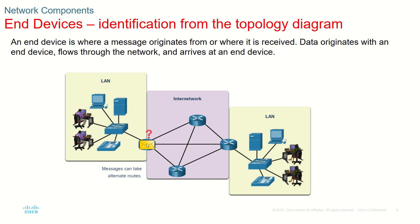At the other end of the network, we again have end devices — a PC, a server, laptops, and an IP phone. An end device is where a message originates from. So the message originates at one end device and is received at another end device.